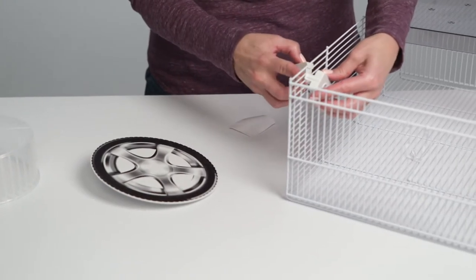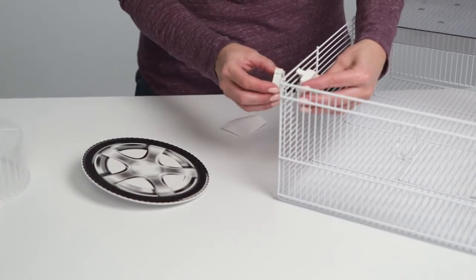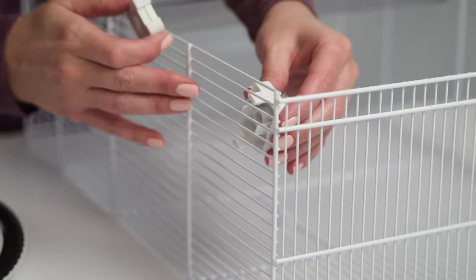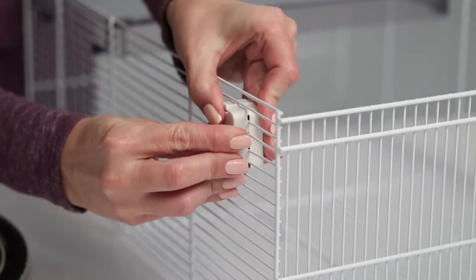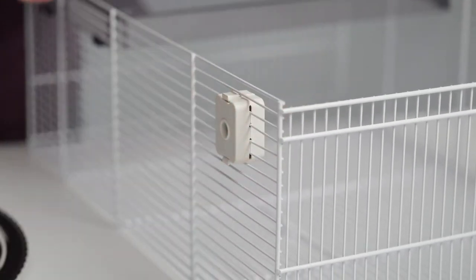Then connect the two pieces of the rectangular wheel mount to the wire. The edge of the mount should rest just below the second horizontal wire and the pieces will click together.